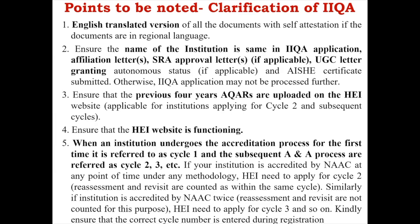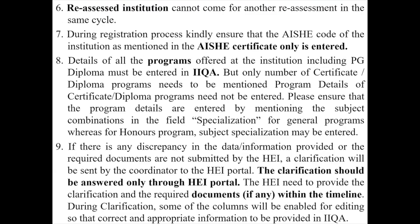For subsequent cycle institutions, uploading all AQRs is mandatory while filing IEQ, and details of all AQRs must be provided. Please ensure the HEI website is functional and links are active so documents can be verified. When an institution undergoes accreditation for the first time it is cycle one; subsequent applications are cycle two, cycle three, etc., irrespective of whether validity has expired. Within the same cycle, an institution cannot be accredited twice — it must apply for the next cycle.